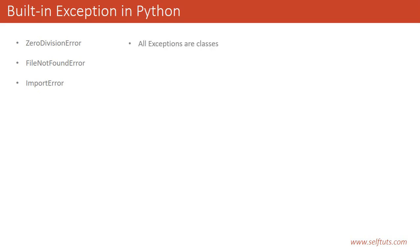The most important concept you need to understand about exceptions in Python is that all exceptions are classes — they are not strings or dictionaries, they are classes. Since Python supports object-oriented programming, all exceptions present inside Python are classes. All built-in exceptions and all the exceptions you will create later on will also be classes.